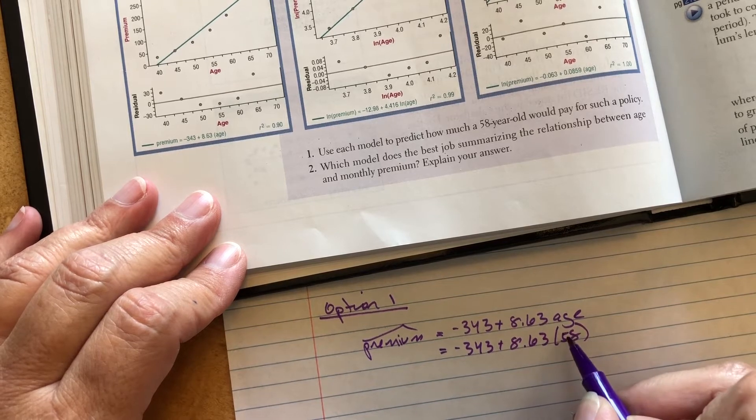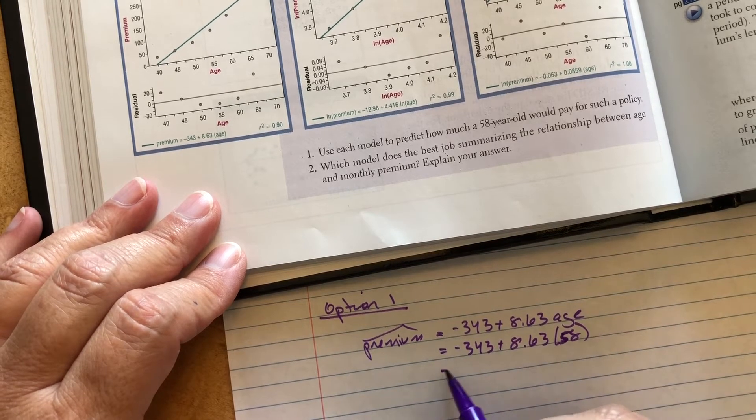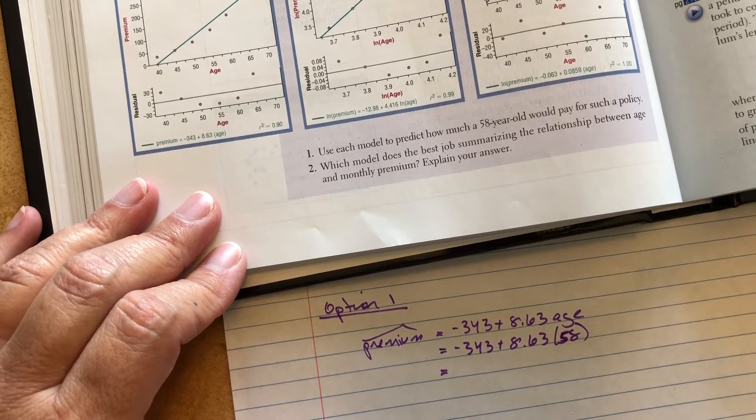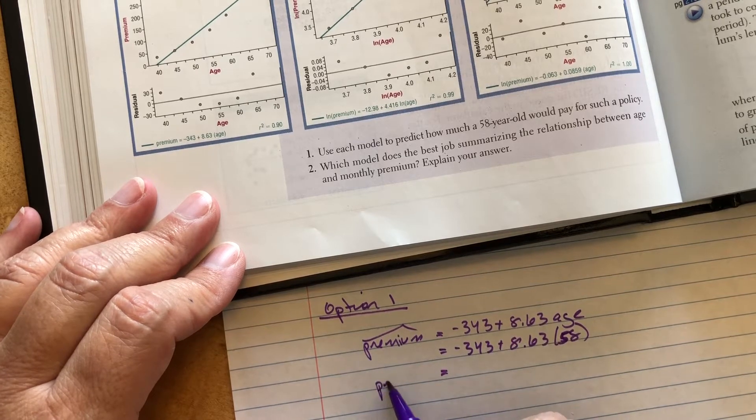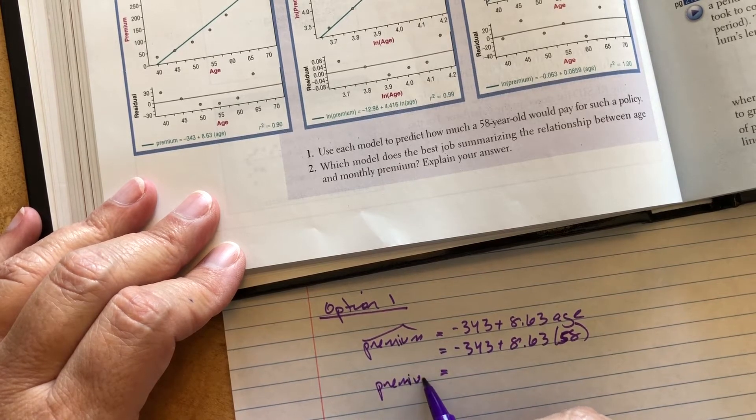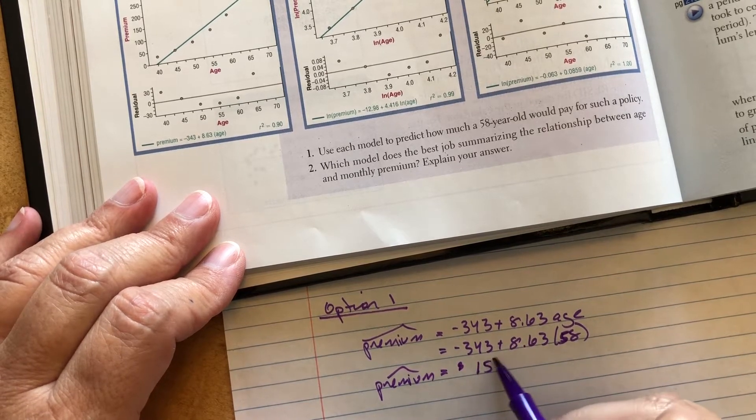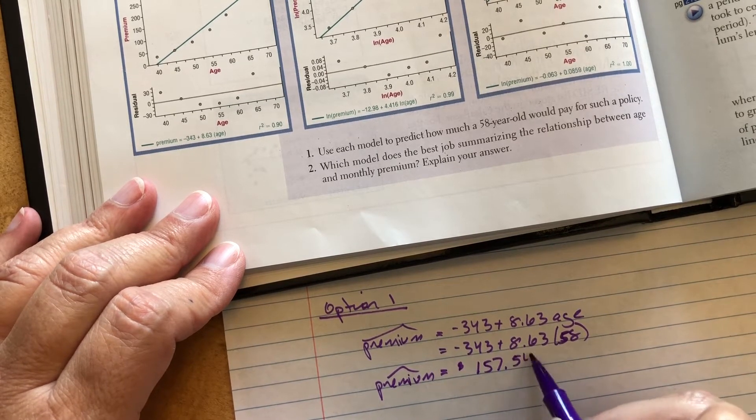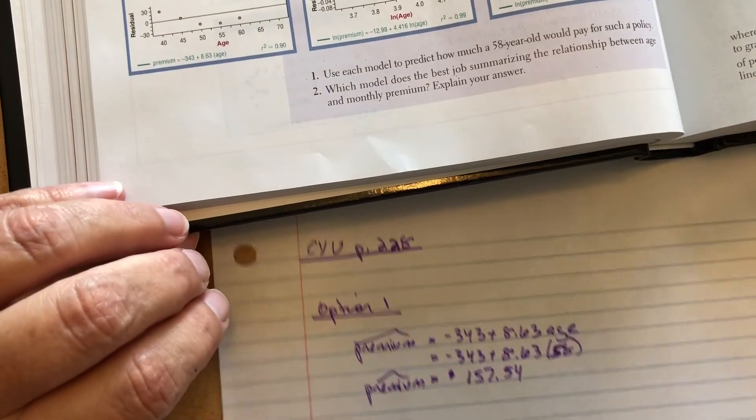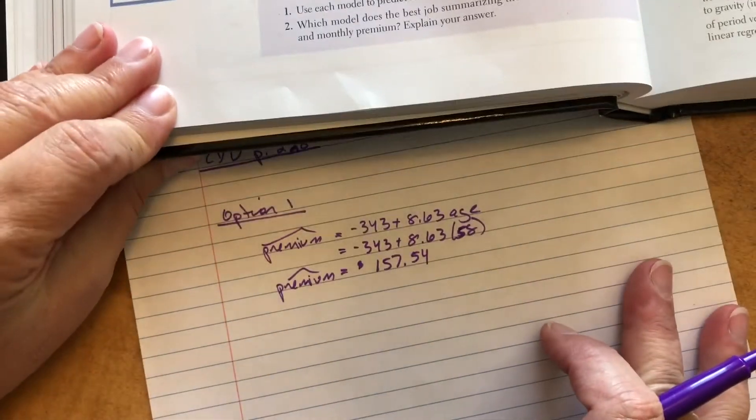Stick that in the calculator. I've already done this. So my predicted premium is going to be $157.54. And you're like, yeah, that prediction seems pretty good. Who knows, whatever.